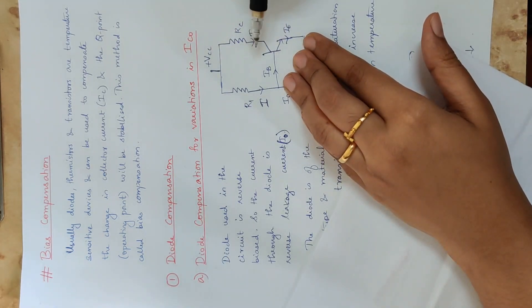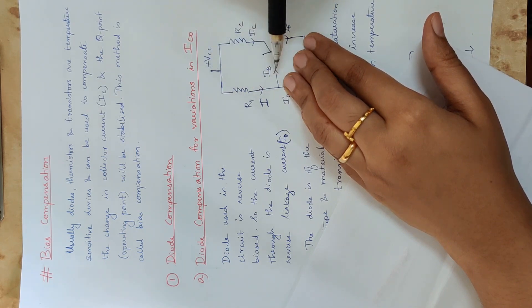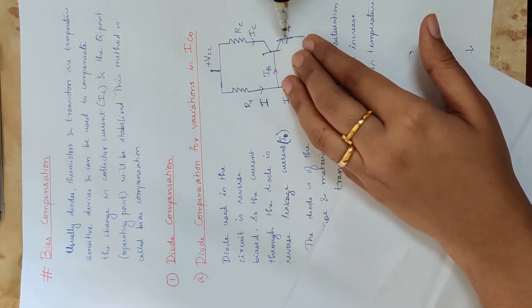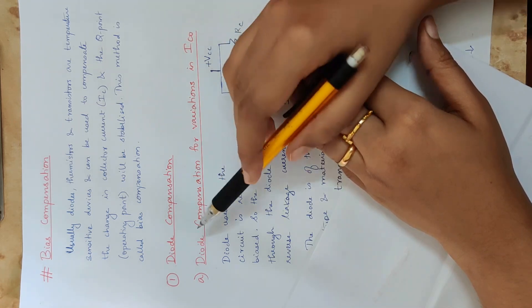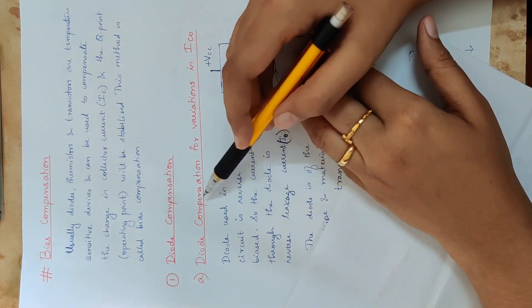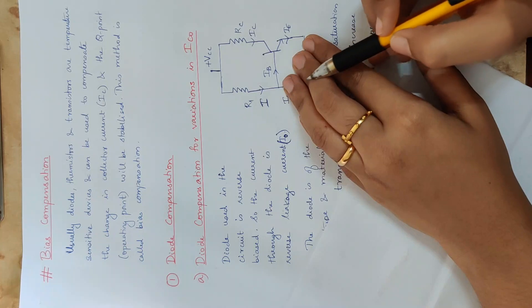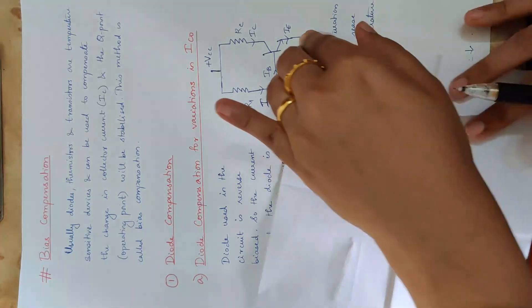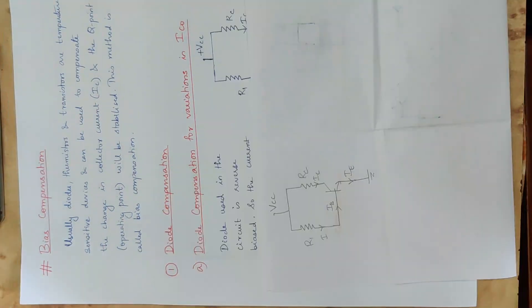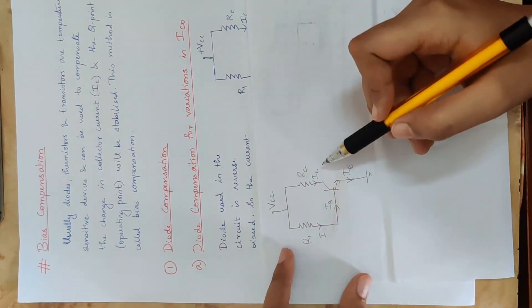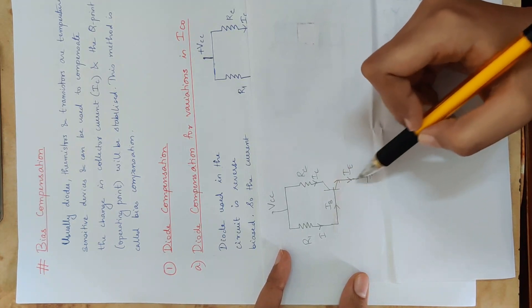The transistor is connected. Supply voltage VCC is connected through a base resistor. There is a collector resistance RC and the emitter is grounded. Now we will start with diode compensation — a diode is connected in this fixed bias circuit with RC, R1, and emitter grounded.